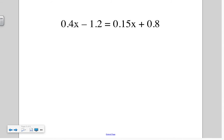Last one, I will start by looking at all my decimals. This one goes out to the tenths, tenths, hundredths, tenths. Since one of them does go out to the hundredths, we need to multiply everything by 100 again. So two decimal places, this is going to become 40x minus 120 equals 15x plus 80.